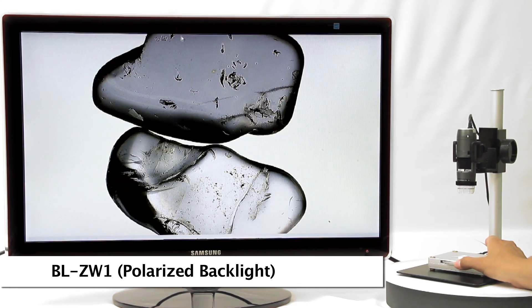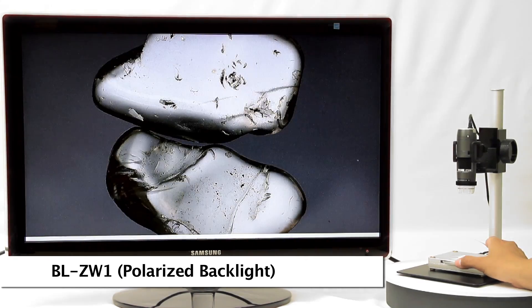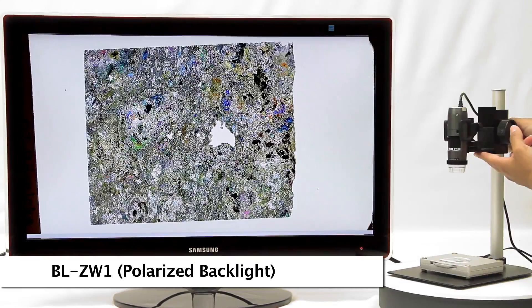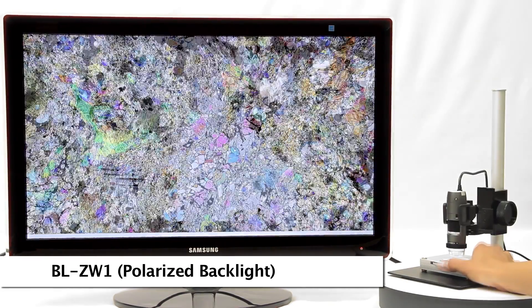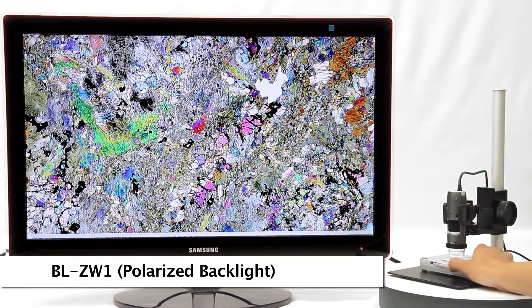The BLZW1 is a polarizing backlight stage. This model can be paired with a polarizing Dynolite microscope for easy cross-polarization microscopy.